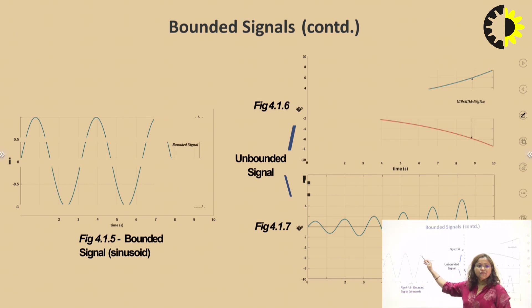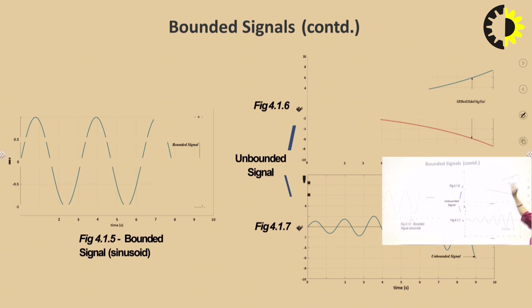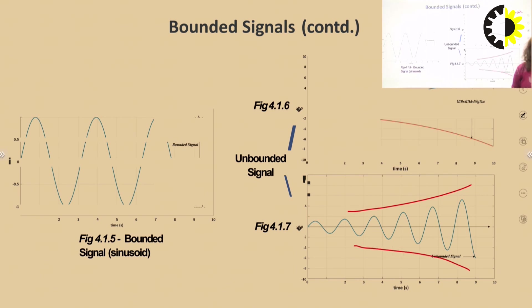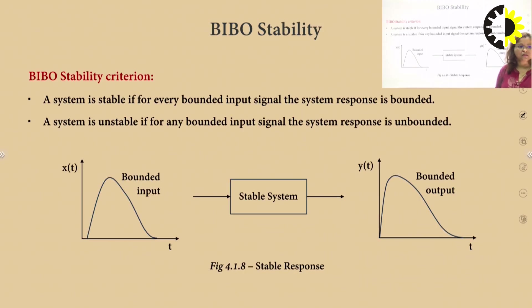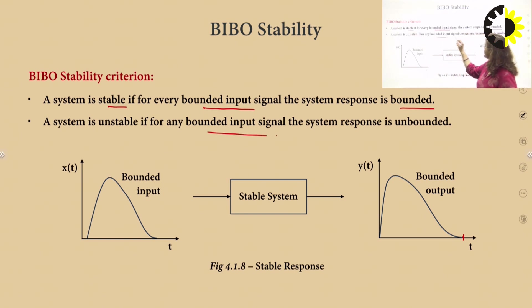So if we consider a sine wave with finite amplitude within plus or minus 1, the signal is a bounded signal. If the response or output of this system grows with respect to time then it becomes unbounded and hence unstable. Whereas if the response tends to decrease and at t tending to infinity it becomes 0, the system is said to be stable. So bounded input yielding bounded response means stable; bounded input yielding unbounded response means unstable.